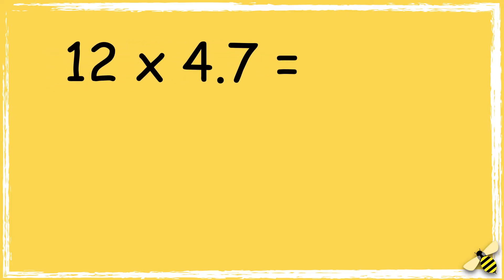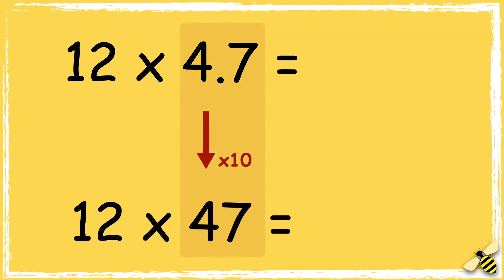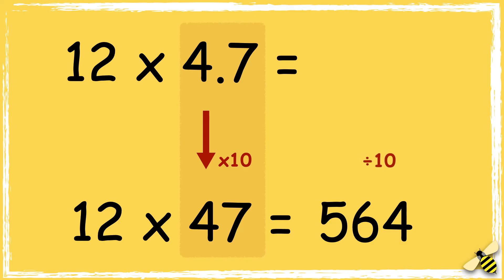Let me explain what we did with the decimal point. We started with 12 multiplied by 4.7. We multiplied 4.7 by 10, so 12 times 47 was 564. As we had previously multiplied 4.7 by 10, we need to do the inverse to the answer. The inverse of multiply is divide, so 564 divided by 10 is 56.4.